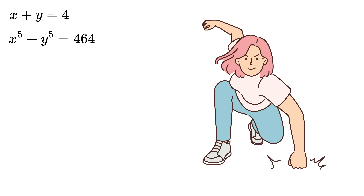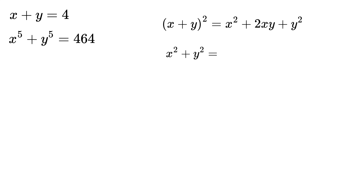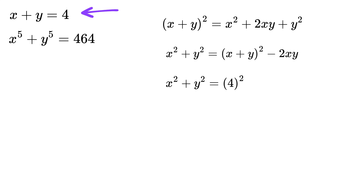We know that (x+y)² equals x² plus 2xy plus y², so rearranging, x² plus y² equals (x+y)² minus 2xy. Since x plus y is 4, we get x² plus y² equals 4² minus 2xy, which is 16 minus 2xy.